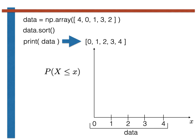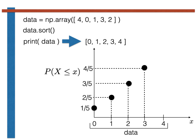The y-coordinates of these points are computed as follows. The y-coordinate for the first data point, which has a value of zero, is one-fifth, because only one of the five points in the dataset is less than or equal to zero. Similarly, the y-coordinate for the second point is 2 over 5, as two of the five points in the dataset have a value that is less than or equal to the value of the second point in the sorted array. By the same logic, the y-coordinate of the third point is 3 over 5, the y-coordinate for the fourth point is 4 over 5, and the y-coordinate of the final point is 1, as every point in the dataset is less than or equal to the largest number in the array.